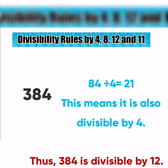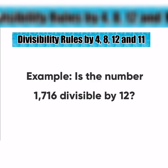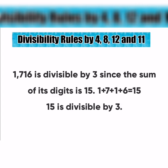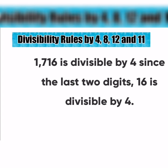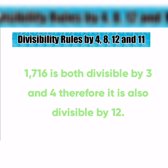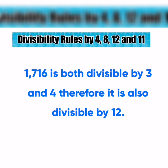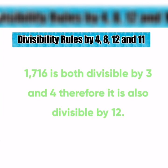Another example: Is 1,716 divisible by 12? 1,716 is divisible by 3 since the sum of its digits is 15. 1 plus 7 plus 1 plus 6 equals 15, and 15 is divisible by 3. 1,716 is also divisible by 4, since the last two digits, 16, is divisible by 4. Since 1,716 is both divisible by 3 and 4, therefore it is also divisible by 12.